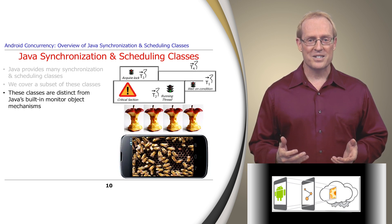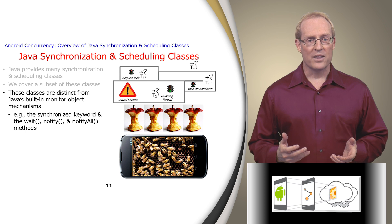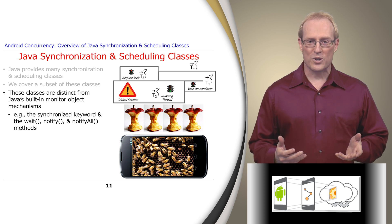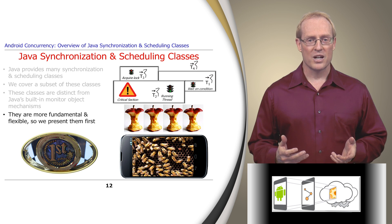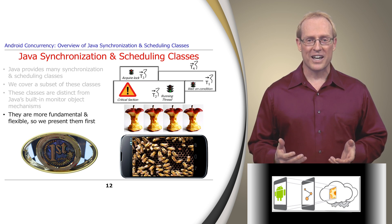Although these five classes allow Java threads to serialize and coordinate their interactions, they are distinct from the synchronized keyword and the wait, notify, and notifyAll methods provided by the built-in monitor object mechanisms available to all Java objects, which are described at this link. These five classes are more fundamental and flexible than the monitor lock and monitor condition provided by built-in monitor objects, so we present them first, which has the added benefit of making it easier to understand Java's built-in monitor objects when we cover them later.